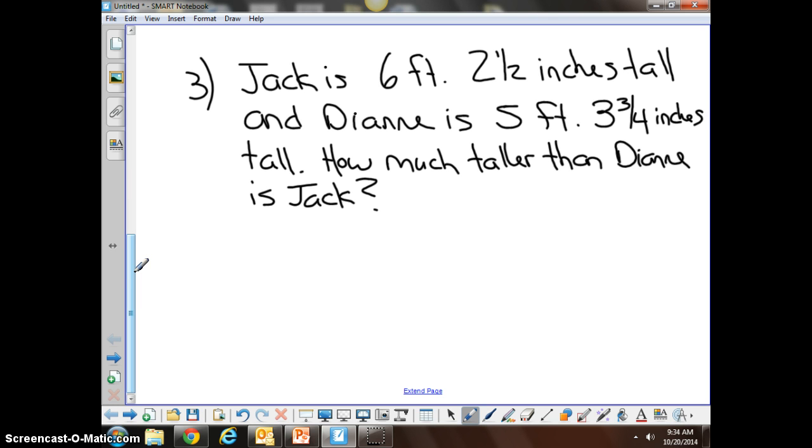Common knowledge tells me that there are 12 inches in one foot. So what I'm going to do is I'm going to take 6 feet 2 and 1/2 inches, and I'm going to convert it into all inches. 6 times 12, because I have 6 feet, and there's 12 inches in a foot. 6 times 12 is 72, plus another 2 and 1/2 inches. We know that Jack is 74 and 1/2 inches tall. I'm going to say this is Jack.